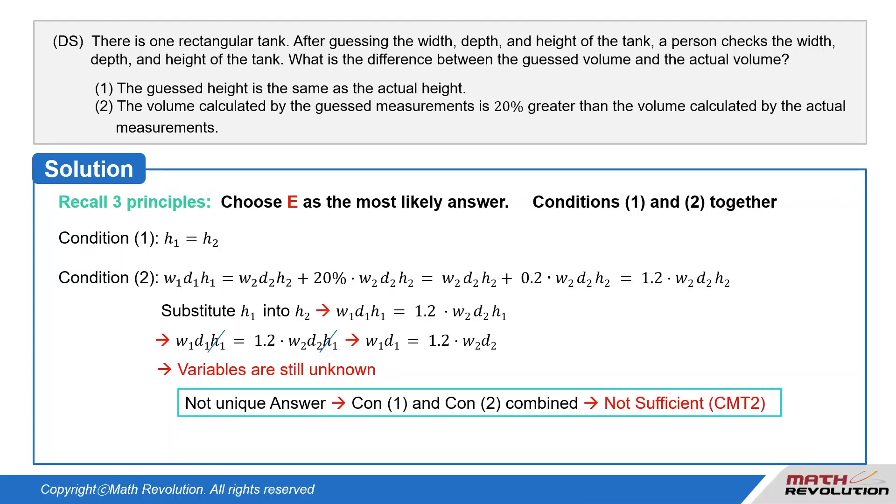And the conditions combined are not sufficient to answer the question by common mistake type 2, which means that the number of answers must be 1. On the actual exam, you can just pick E as the answer and save time for another question. Both conditions 1 and 2 together are not sufficient. So, E is the correct answer.